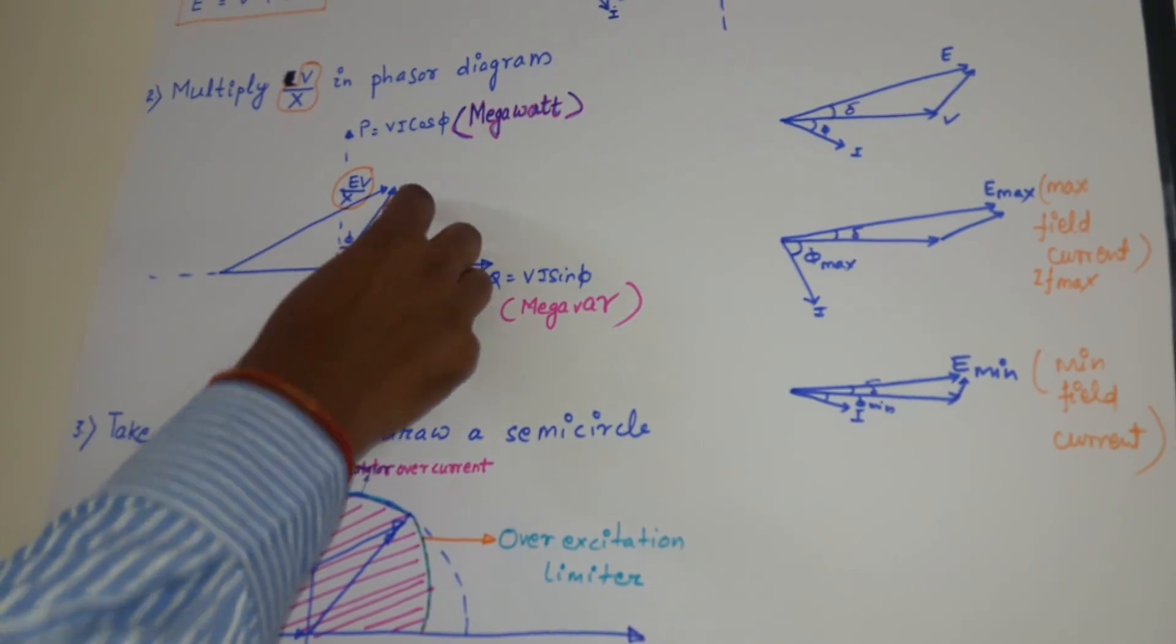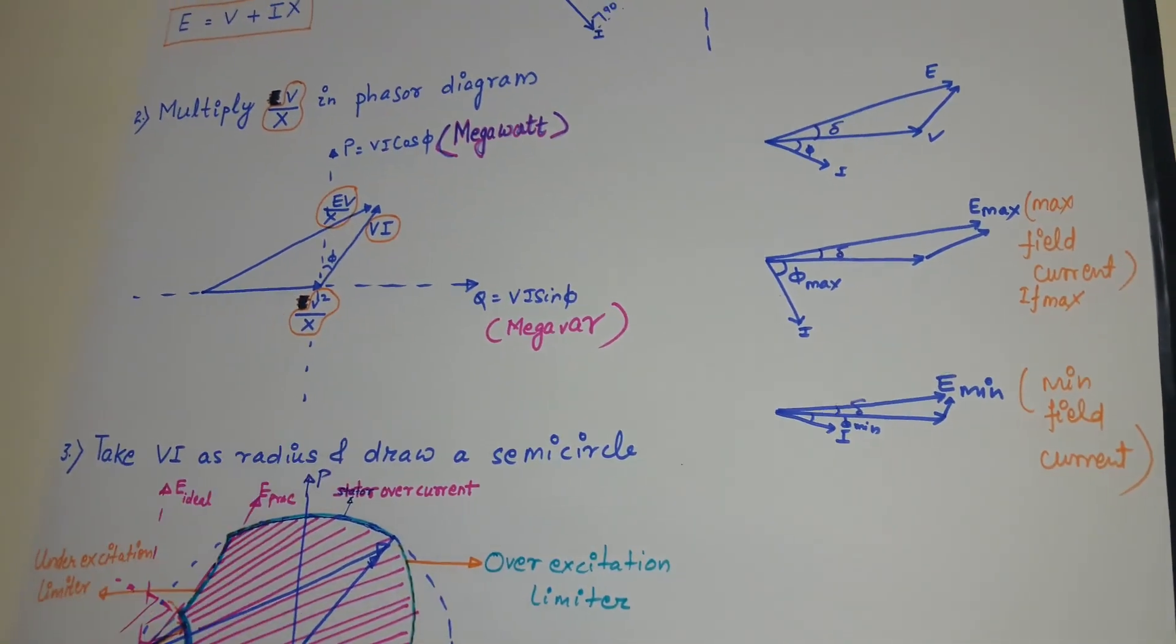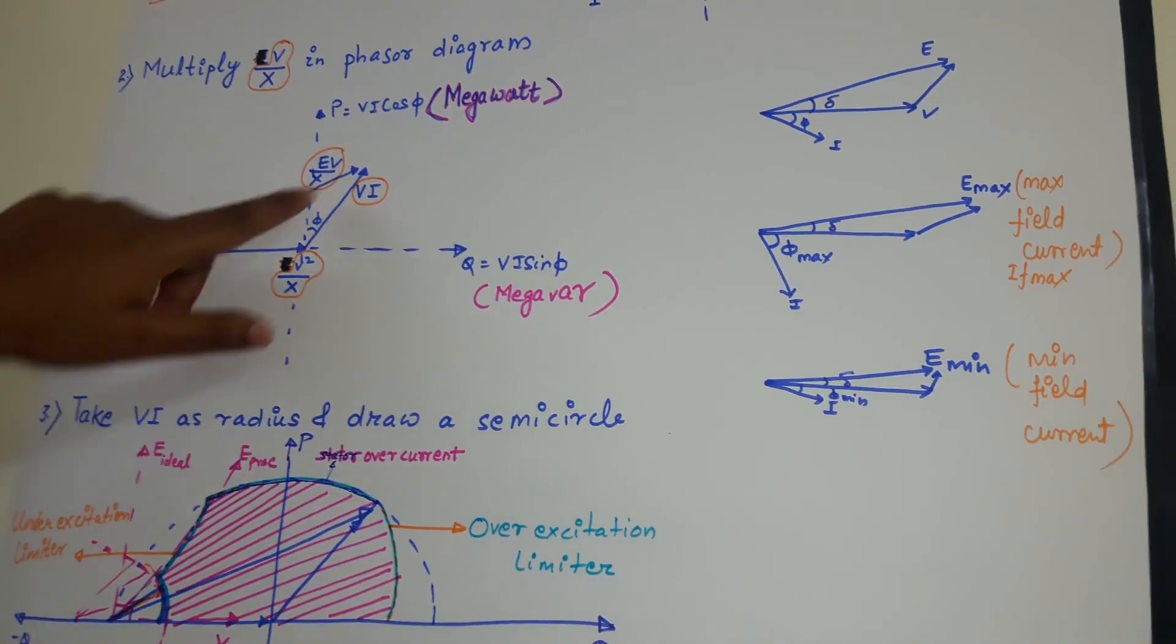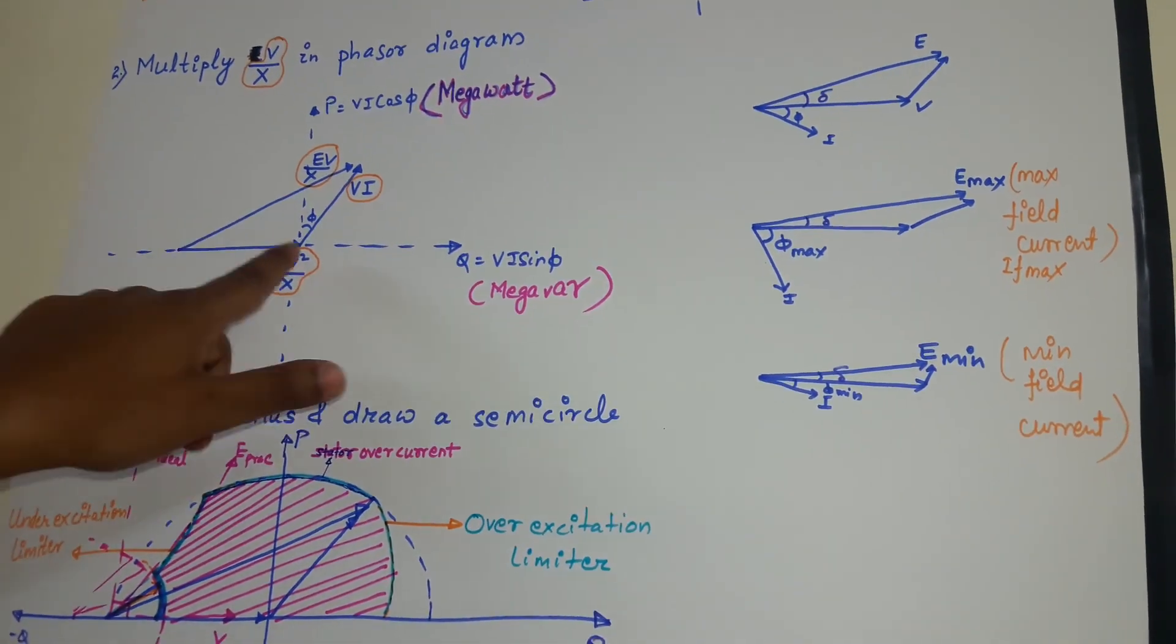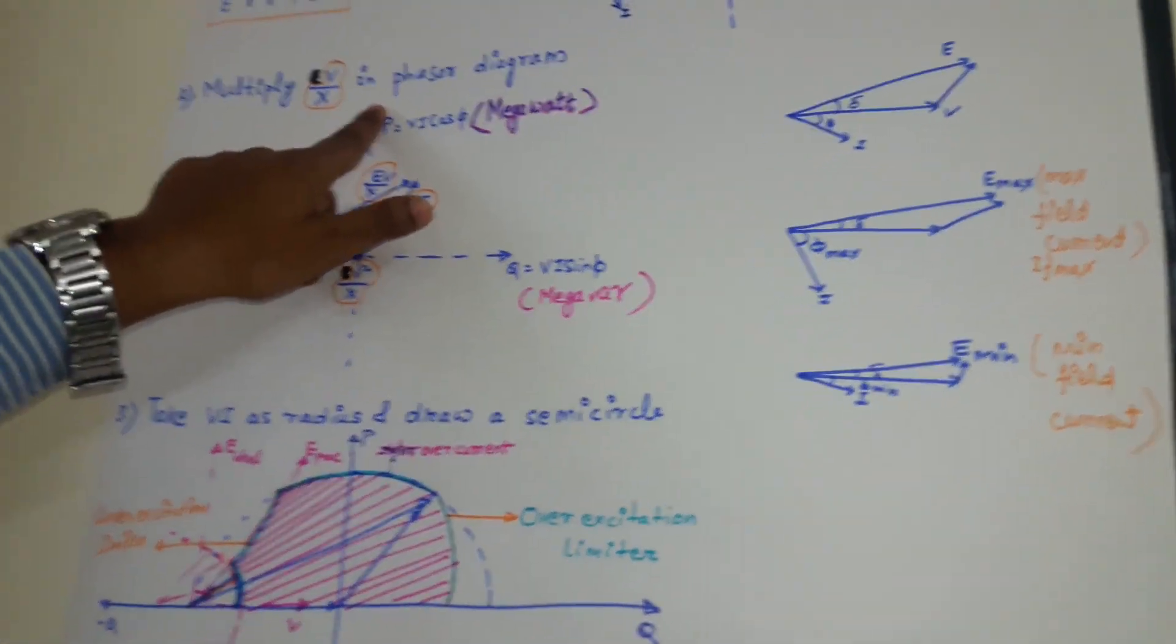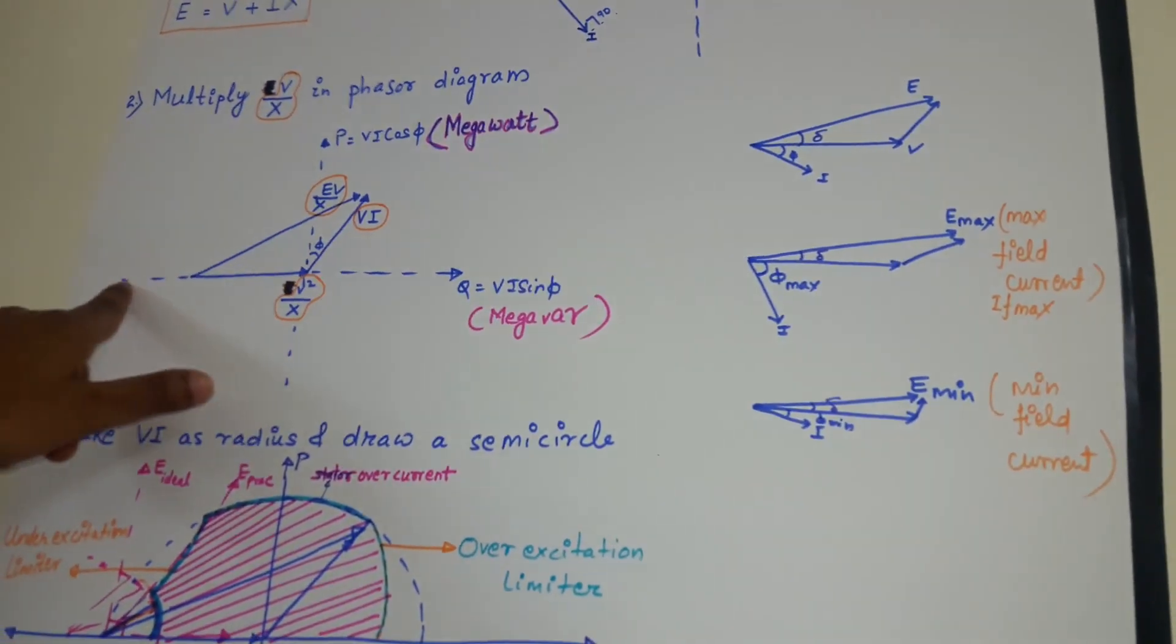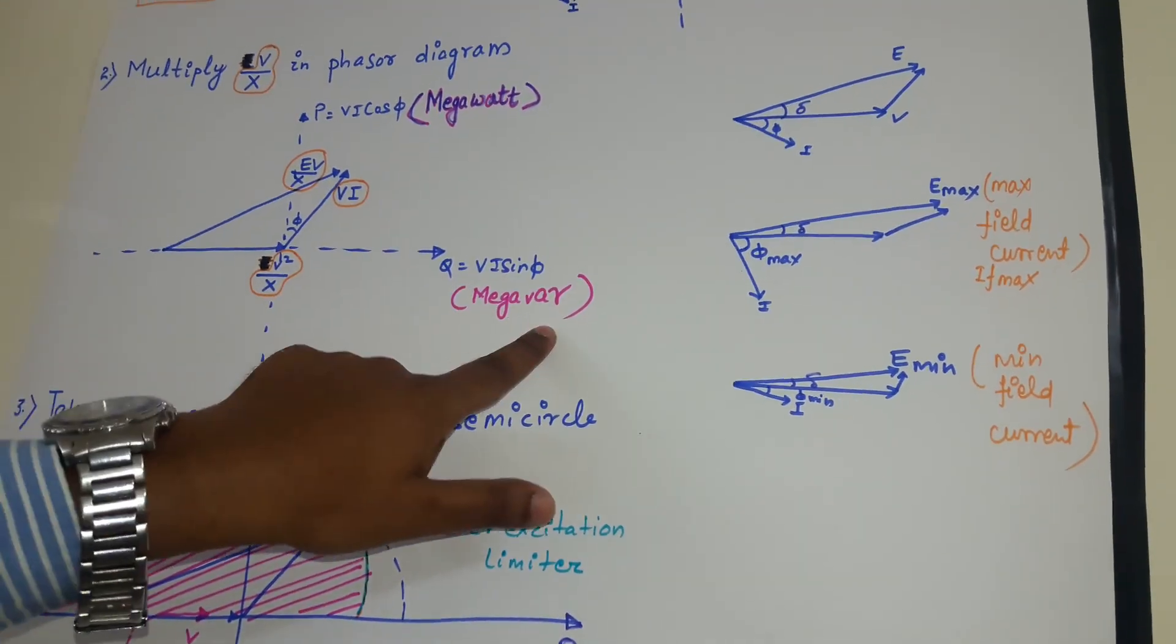Now take horizontal projection of this VI in this Y axis. We are getting VI cos phi. Take vertical projection of this line VI over the X axis. We are getting VI sin phi. So I can say this Y axis stands for my VI cos phi that is real power or megawatt.